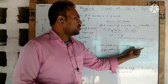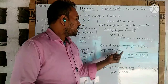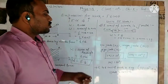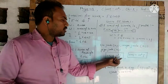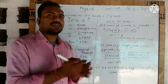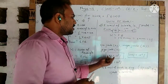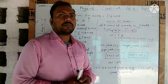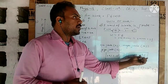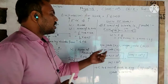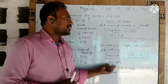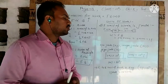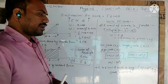Some bigger units of work are: kilojoule (kJ), megajoule (MJ), and gigajoule (GJ). One kilojoule equals 1000 Joules. One megajoule equals 10 to the power 6 Joules. One gigajoule equals 10 to the power 9 Joules.